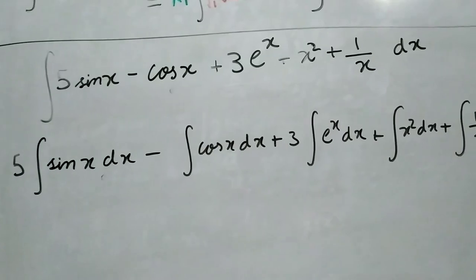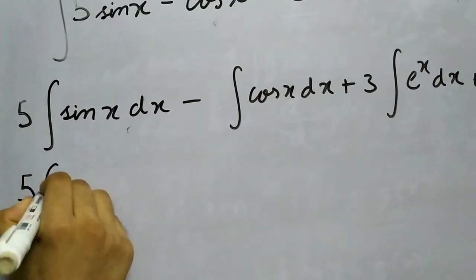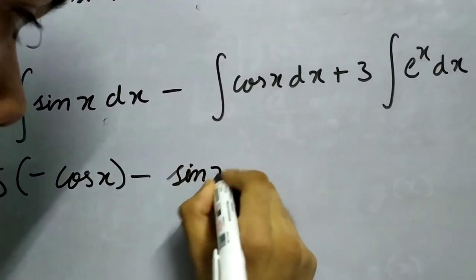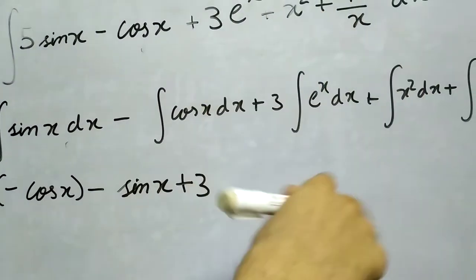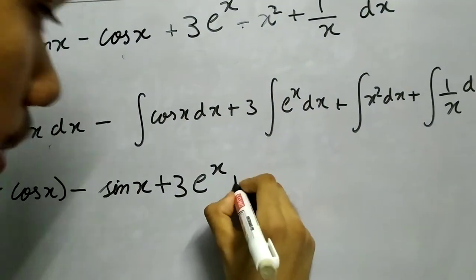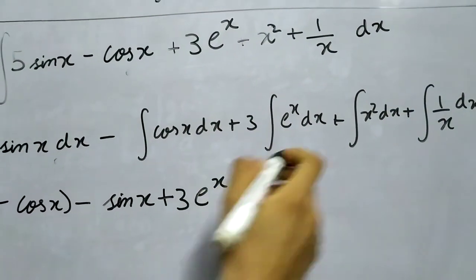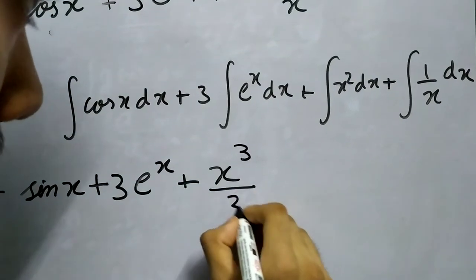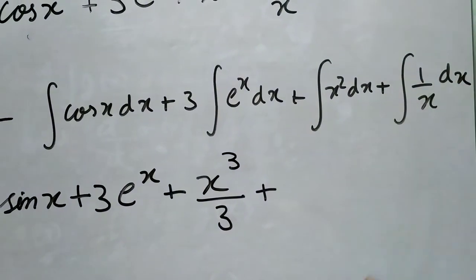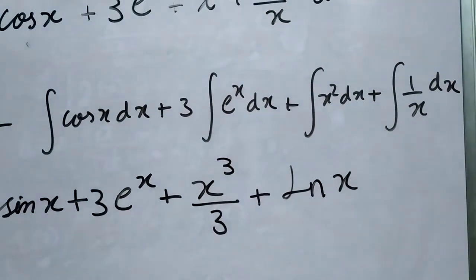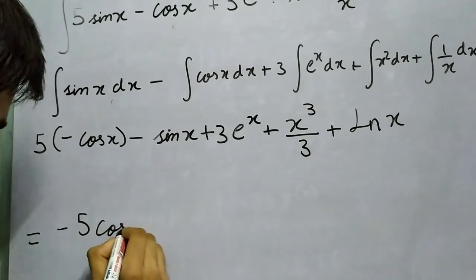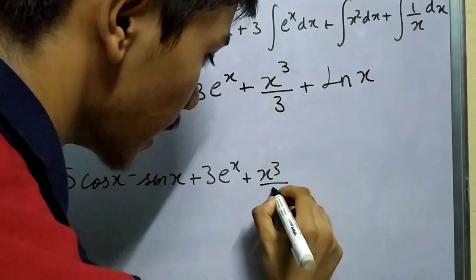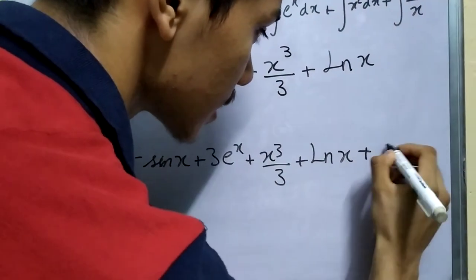The integral of sin(x) dx is minus cos(x), so 5 times minus cos(x). Minus the integral of cos(x) dx, which is sin(x). Plus 3 times the integral of e to the x dx — this is very special, it remains the same, so e to the power x. Plus the integral of x squared dx: x to the n+1 divided by n+1 gives x cubed divided by 3. Plus the integral of 1 by x dx, which is ln(x). So finally we get minus 5 cos(x) minus sin(x) plus 3e to the power x plus x cubed by 3 plus ln(x) plus some constant.